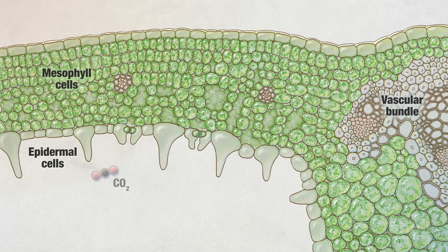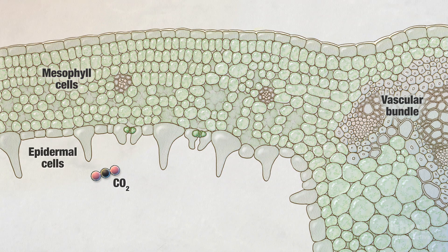Carbon dioxide from the air enters a leaf through small pores called stomata on the outer cell layer. Oxygen formed during photosynthesis also exits the plant through the stomata.